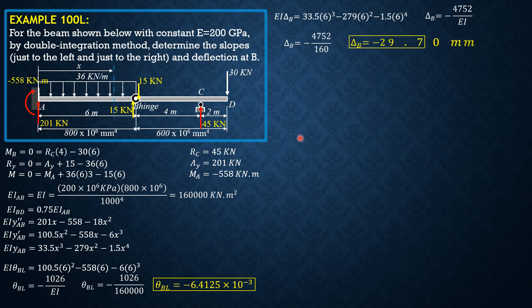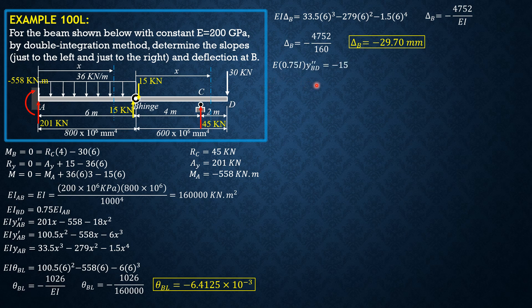Now let's establish the differential equation for portion BCD. The moment of inertia is 0.75 of that for AB. The origin is at B, and since the deflection at B is already known, C3 will be the slope just to the right and C4 is the deflection at B. The equation is: EI times 0.75I times y'' BD equals negative 15x plus 45 times (x minus 4).